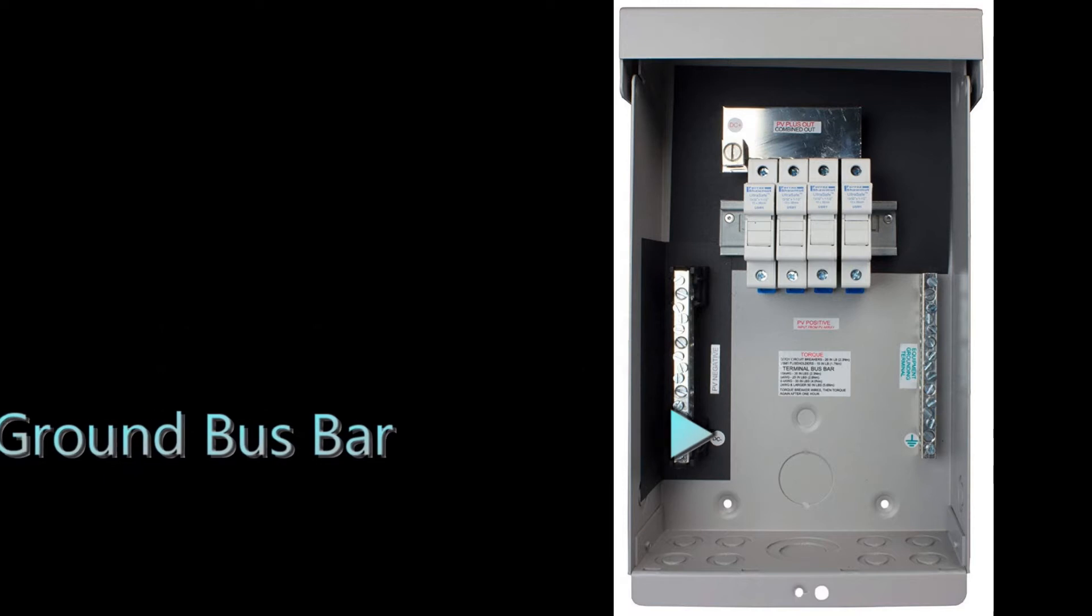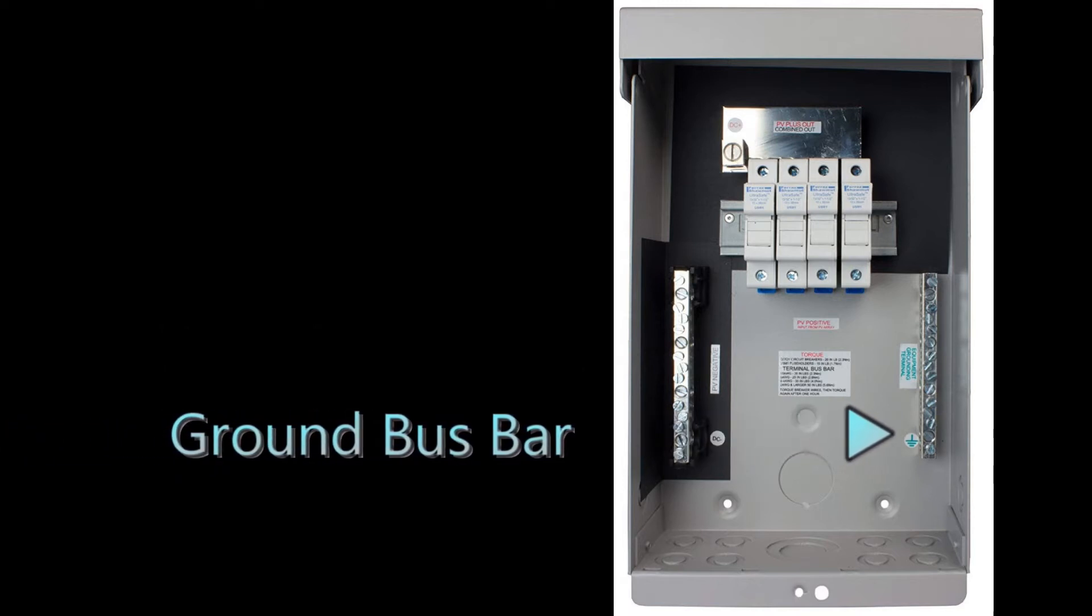There's a grounding bus bar. This is where all the equipment ground will be connected to. We'll discuss where you would connect the ground from your rails and then you'll continue the equipment grounding to your DC disconnect.